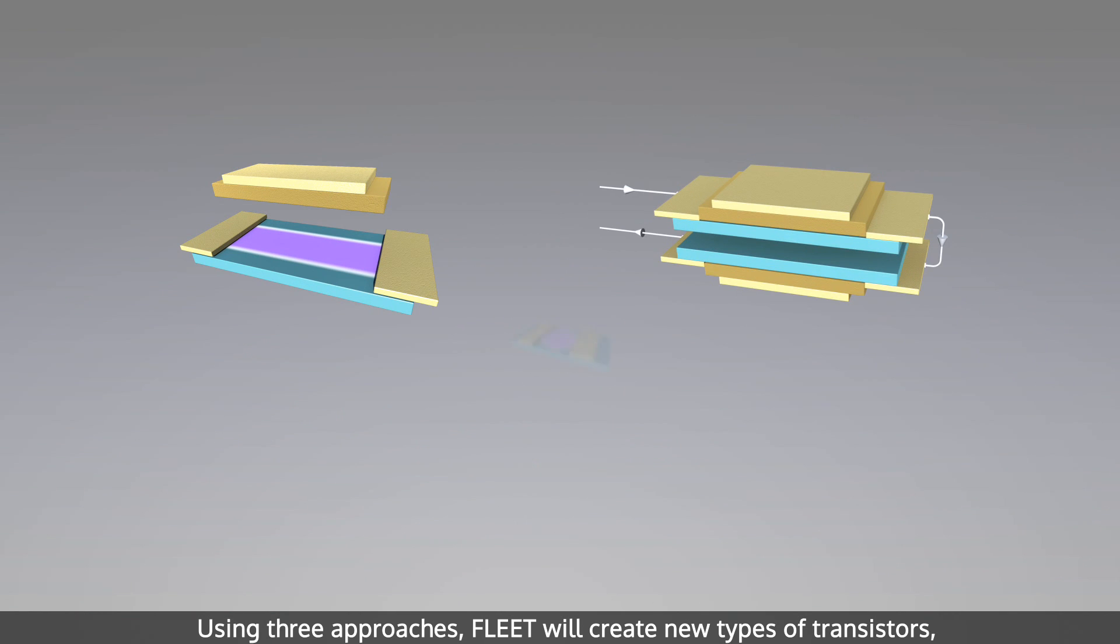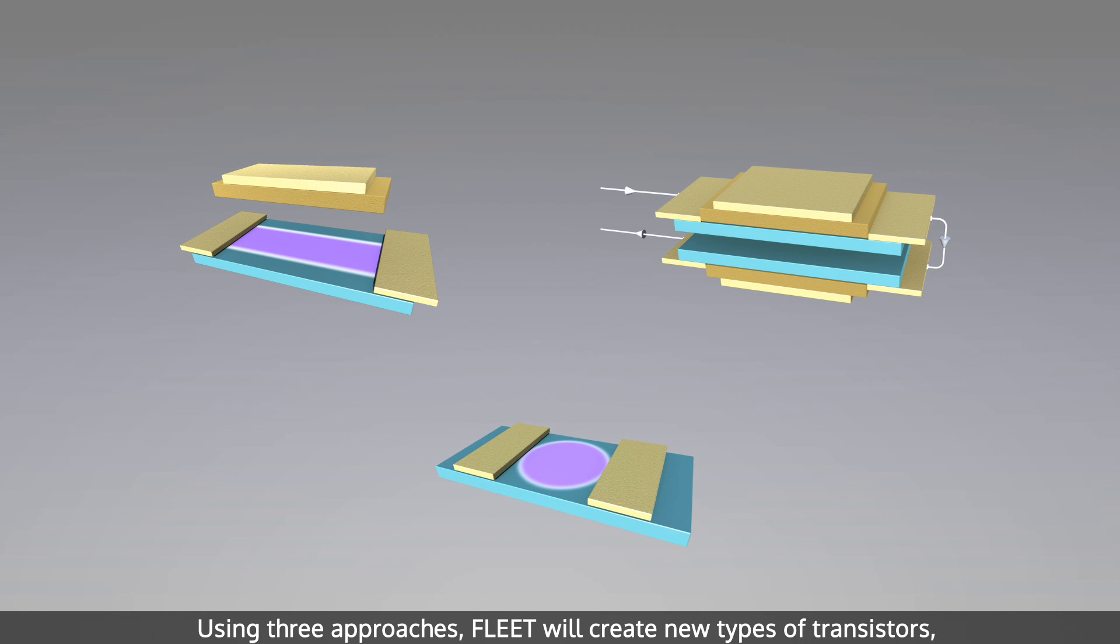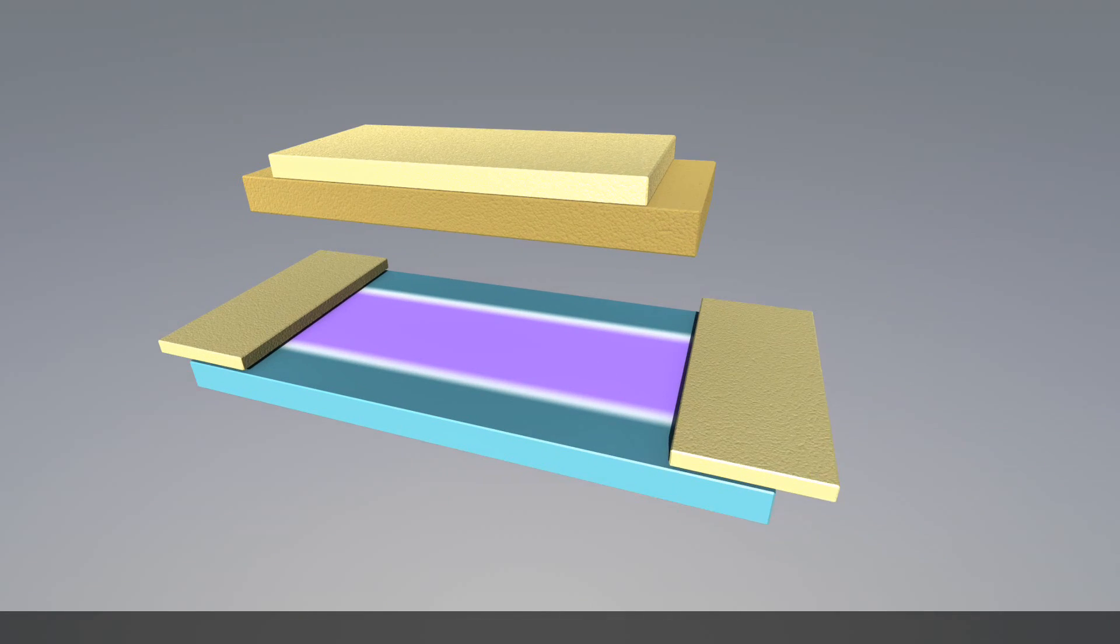Using three approaches, Fleet will create new types of transistors in which an electrical current can flow without resistance at room temperature.